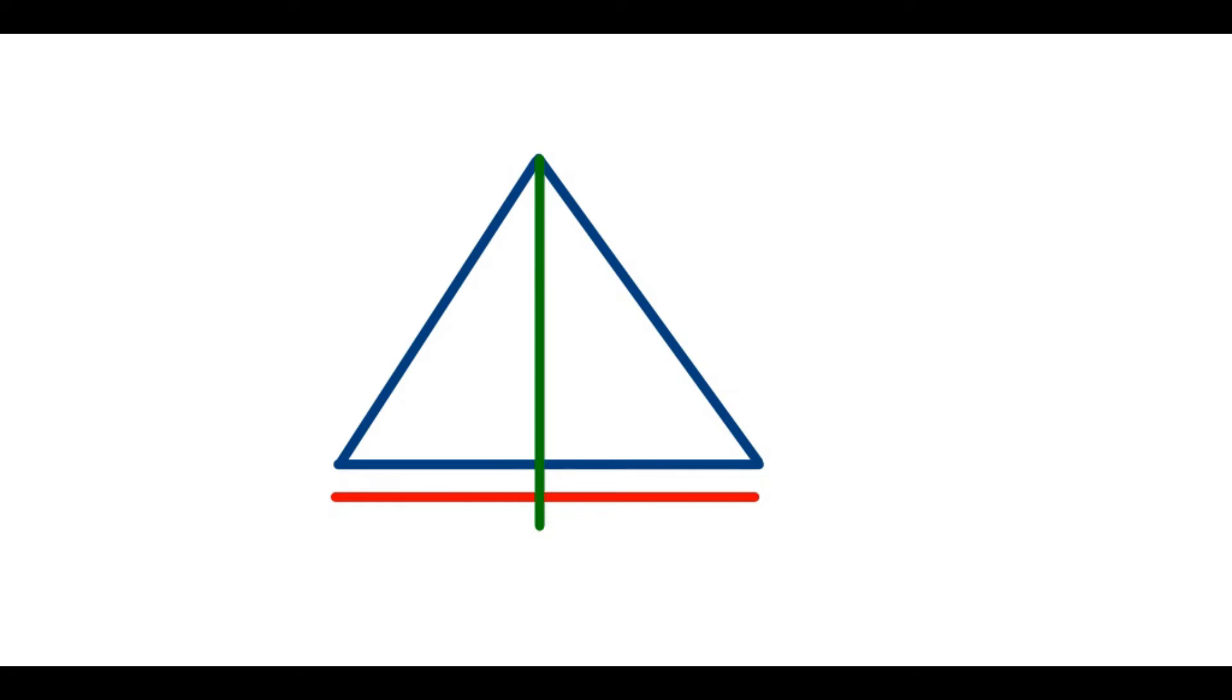For example, it would be 6 centimeters. If I'm saying that it is an equilateral triangle, this means all sides are equal - this is 6 centimeters, this is 6 centimeters.